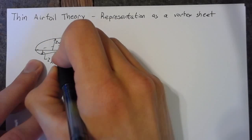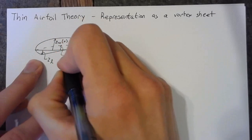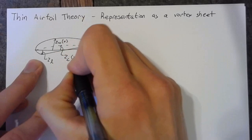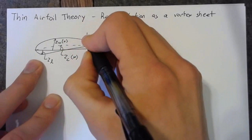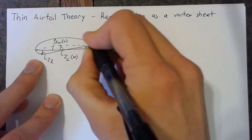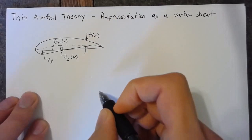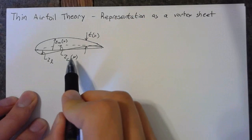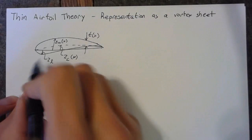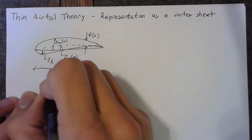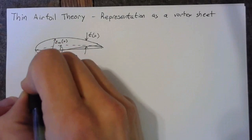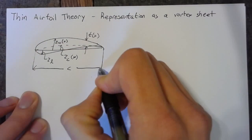Our camber line we're going to call zc of x. Then finally, we're going to have some thickness, which we're just going to call t of x. Also, in this case, x runs from 0 to c, so this distance is going to be c.